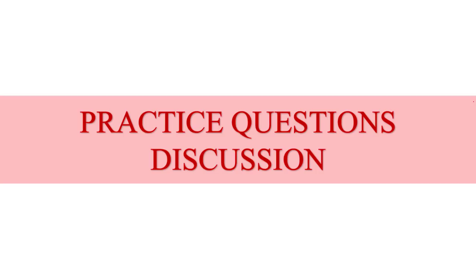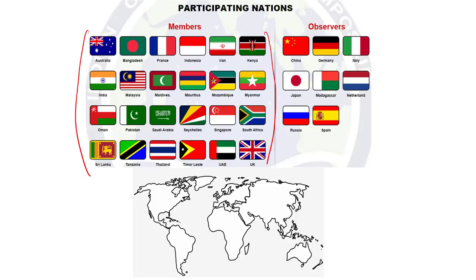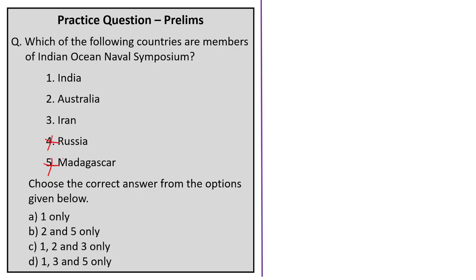In the practice questions discussion, the first question asks which countries are members of IONS. The countries given are India, Australia, Iran, Russia, and Madagascar. There are 24 member countries and 8 observer countries. Russia and Madagascar are observers — though Madagascar is a littoral state in the Indian Ocean, it is only an observer. India, Australia, and Iran are members. The correct answer is option C: 1, 2 and 3 only.